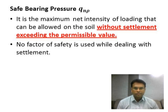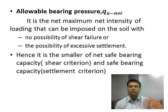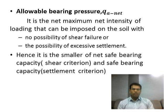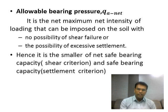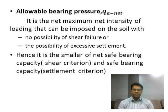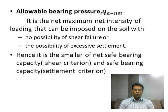Allowable bearing pressure, Q_A(net), is the maximum net intensity of loading that can be imposed on the soil without causing any shear failure and without causing excessive settlement beyond the permissible limit. The two criteria are net safe bearing capacity (shear criterion) and safe bearing pressure (settlement criterion). The minimum of these two terms is the allowable bearing pressure: Q_A(net) = min(Q_NS, Q_Nρ).